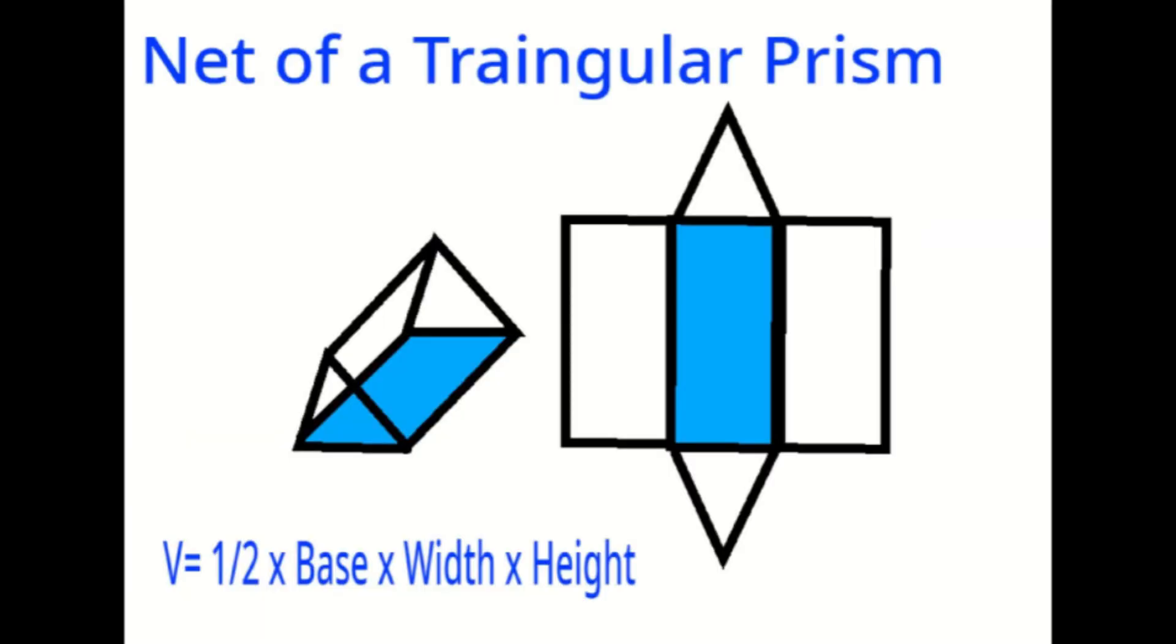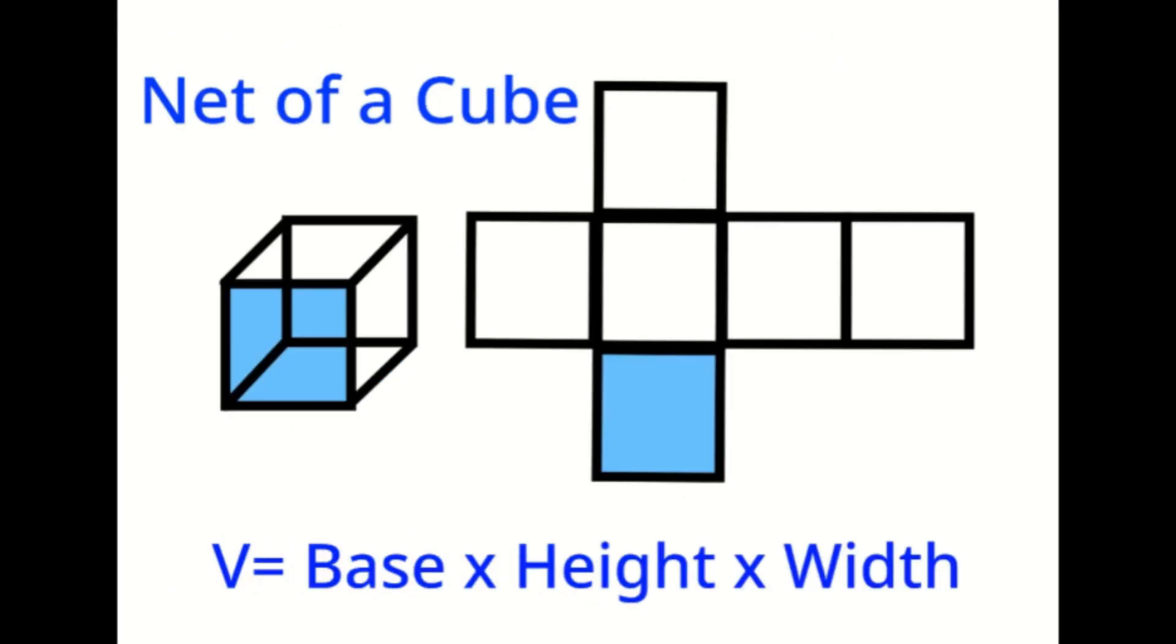First, a net of the shape. The net of a 3D shape is what it looks like when it's opened out flat. A net can be folded up to make that 3D shape, so it is very important in packaging.